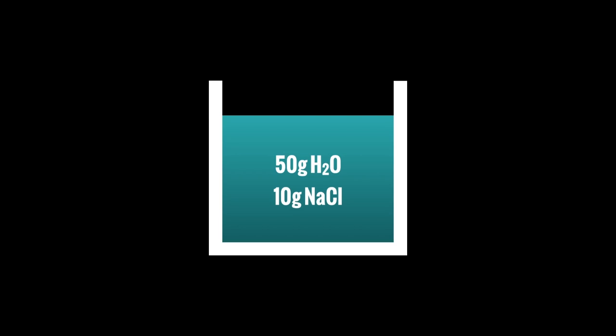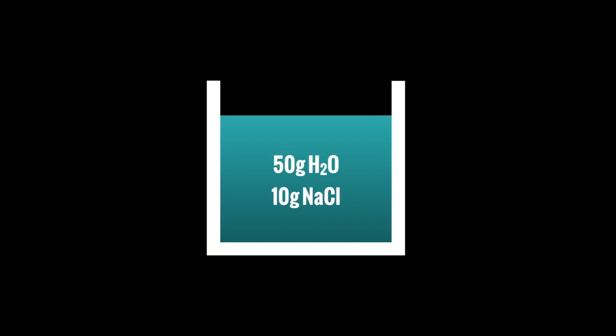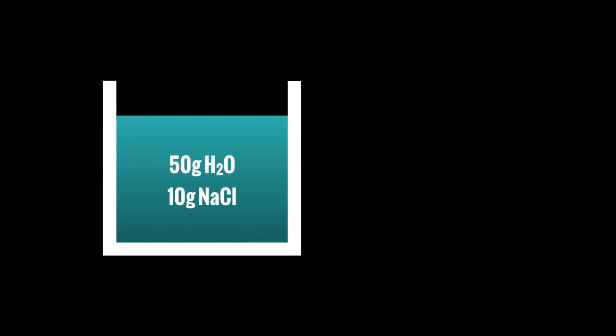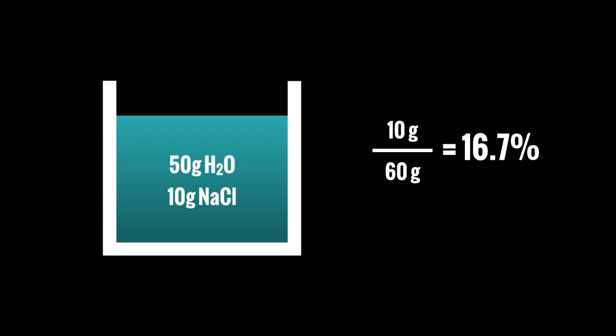The first thing you might do is divide the grams of solute by the total grams of the solution. When you do that, you get 10 grams of NaCl per 60 grams total — that's 50 grams of water plus 10 grams of NaCl — and when you divide them you get 16.7%. This number, when you divide the grams of solute by the grams of solution, is called percent composition by mass.